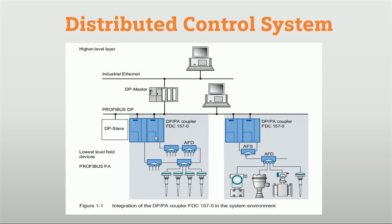Here we use AFD or AFS. AFS is the active field splitter, used for making redundancy with the coupler. We connect two DP/PA couplers so when one coupler fails, the second coupler takes over for communication. With the help of AFS, field devices can connect with the main automation station. The active field distributor (AFD) is used for connecting field devices with the coupler. Using ring redundancy, when any active field distributor fails, the coupler can carry data to the automation station. This is how AFD and AFS are used to establish redundancy in the DCS system.